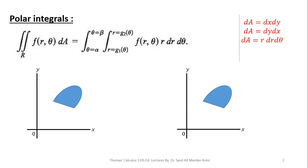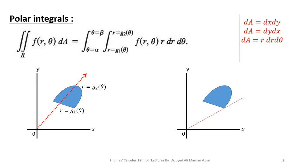The limits of theta are calculated as the radian measure of the angle in the counterclockwise direction with the positive x-axis. To calculate limits of R, we pass an arrow through our region — the boundary where the arrow enters gives the lower limit of R and where it exits gives the upper limit. For theta, we calculate the starting angle alpha and the ending angle beta in the counterclockwise direction.